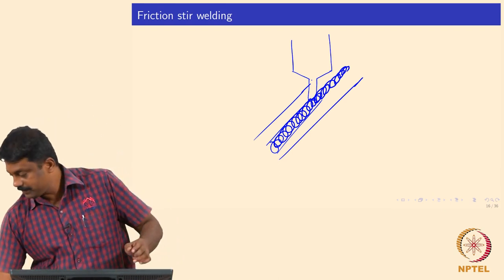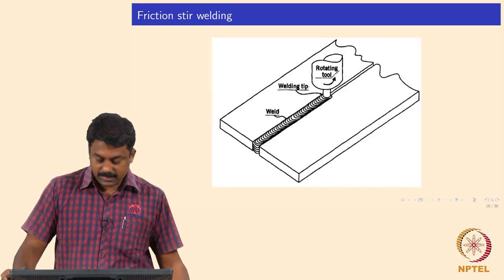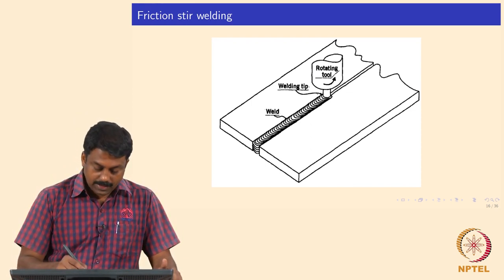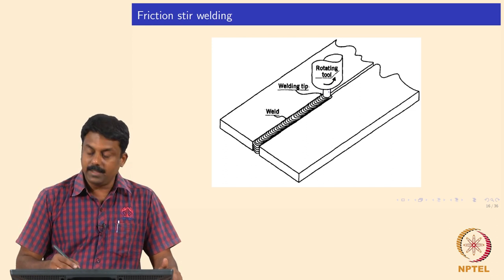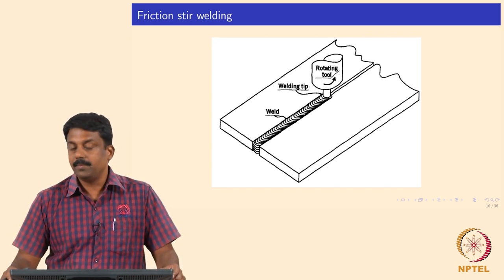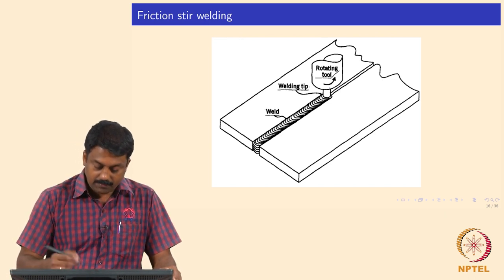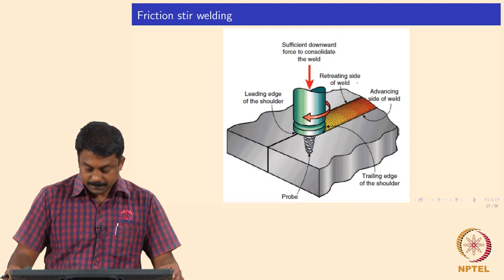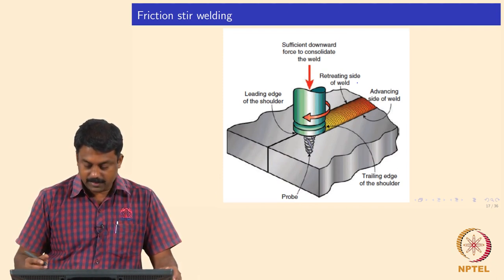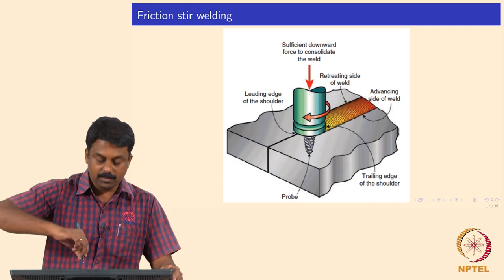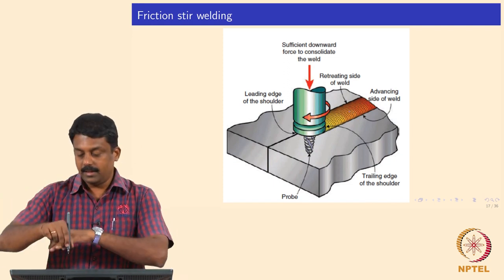I also brought some samples — we will look at them after looking at the slides. A rotating tool is plunged onto the sample, the material is deformed at the interface, and the high temperature enables easy flow of material because material softens at high temperature. There are some distinctive regions along this weld interface. When the tool is rotating along a direction, we have an advancing side and a retracting side.